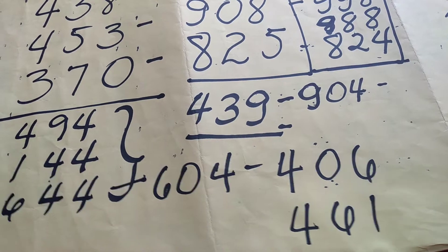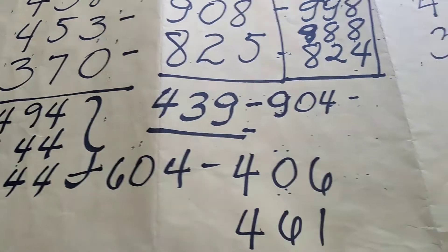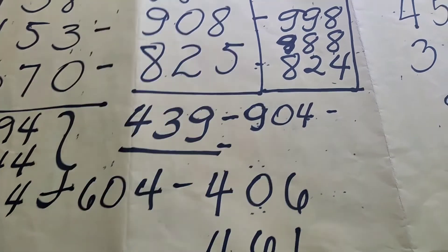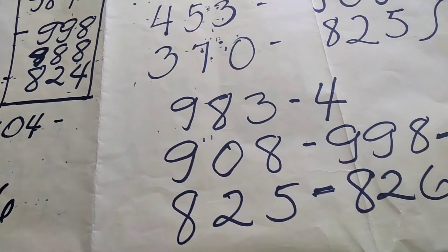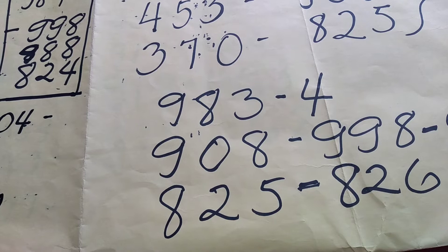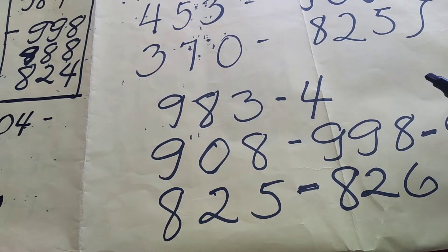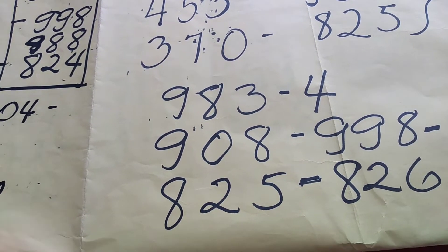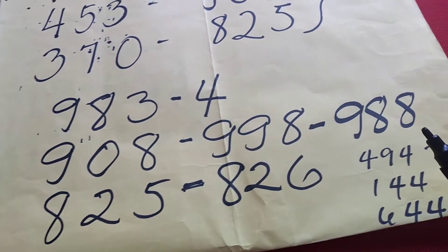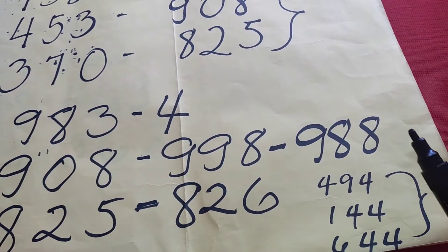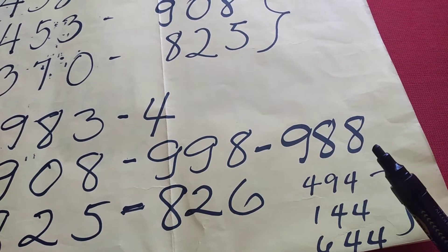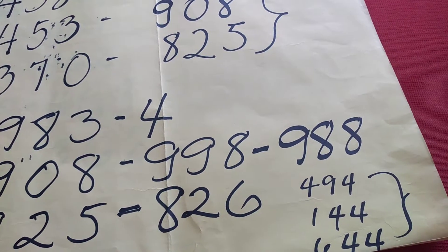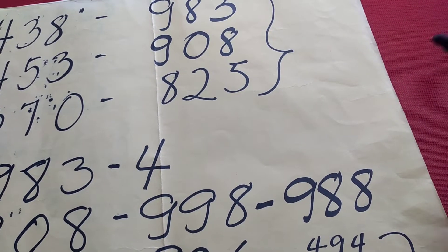Malala nyo pa ba? So kahapon sabi ko, ay naku, ito ang probable ko: 9, 3. Baka nagdagan ng 4. Tapos sabi ko 9, 0, 8. Baka ito maging 9, 9, 8 o 9, 8, 8. Pero ito ay naging 9, 6, 8.